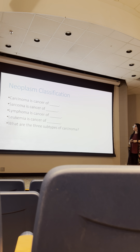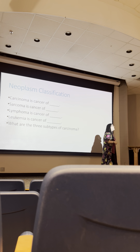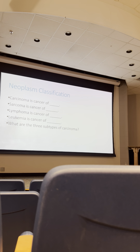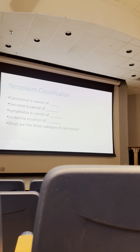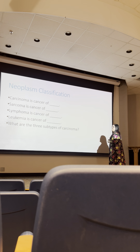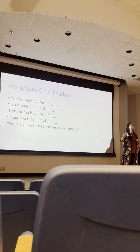For carcinoma, epithelial tissue has three subtypes. Adenocarcinoma impacts glandular tissue — adeno means glandular — so that's columnar and cuboidal cells. If we're not talking about glandular tissue, we're talking about squamous. There are two versions of squamous carcinoma: squamous cell carcinoma, affecting typically stratified squamous cells, and basal cell carcinoma, which specifically impacts the stratum basale.